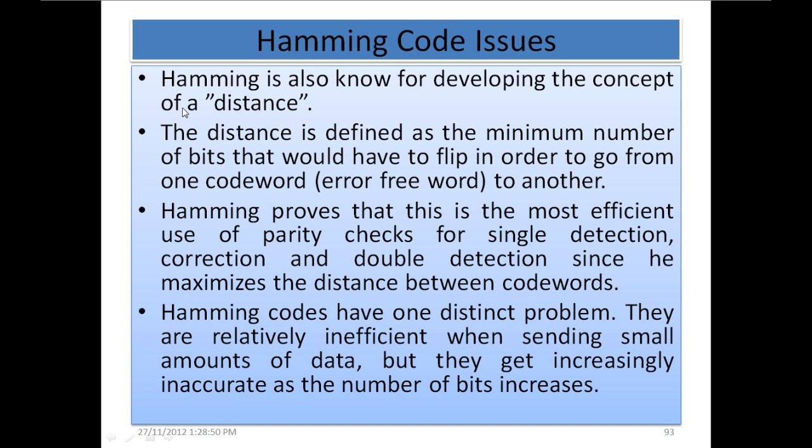Hamming code issues: Hamming is also known for developing the concept of a distance. The distance is defined as the minimum number of bits that would have to flip in order to go from one codeword to another. Hamming proves that this is the most efficient use of parity checks for single detection, correction, and double detection, since he maximizes the distance between codewords.